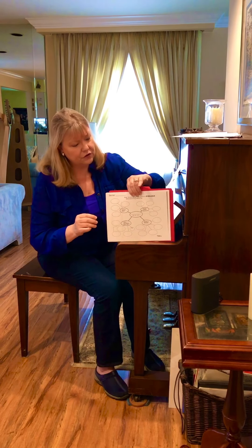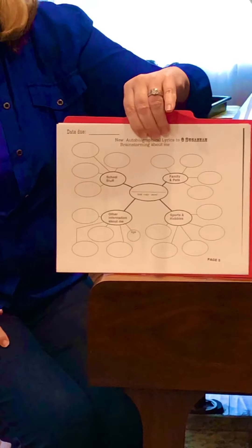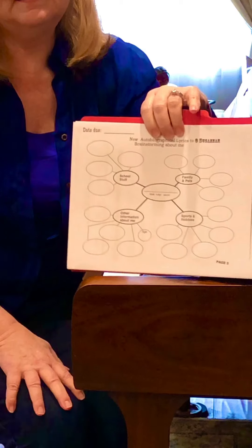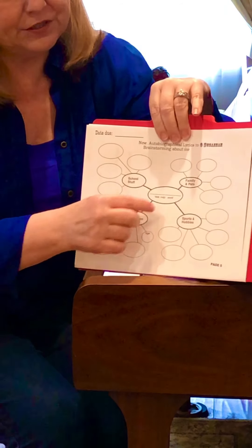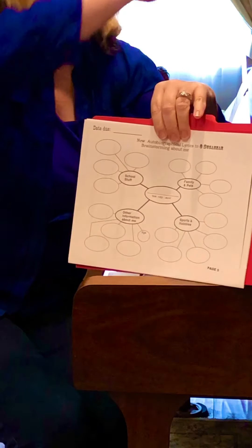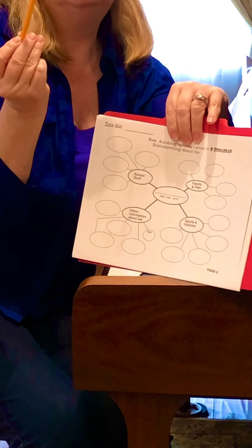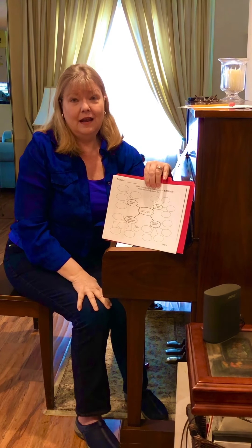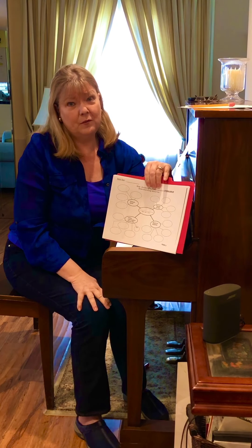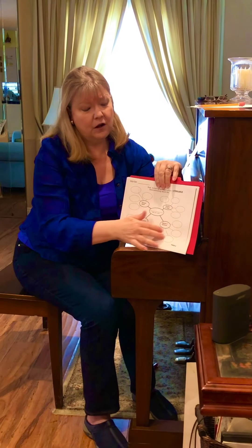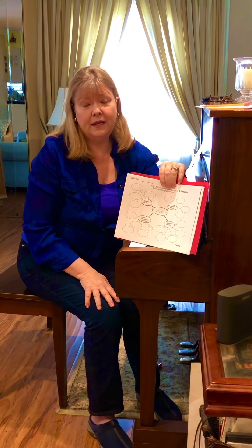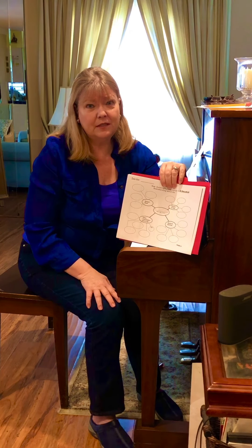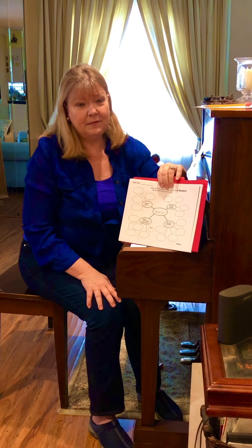Please turn to page five. In the middle circle, on the line, please print your first name — if you have a nickname and you want to use that, that's fine. Print your first name in the big bubble using your pencil. Now put your pencil down and just listen for a few moments. You're going to do this part over a period of a week or a week and a half; you don't have to do it all at once.